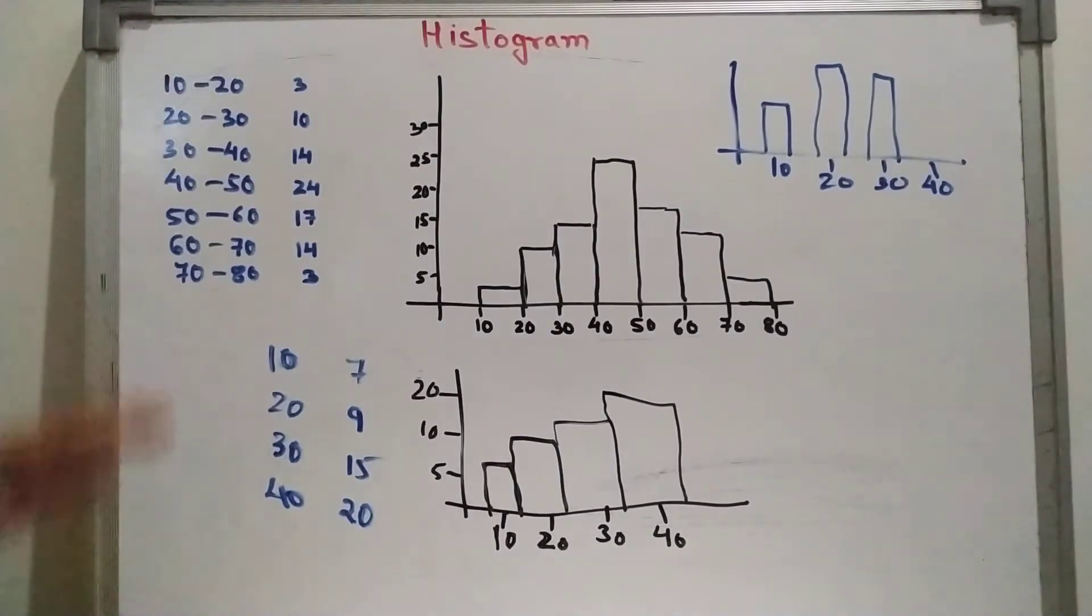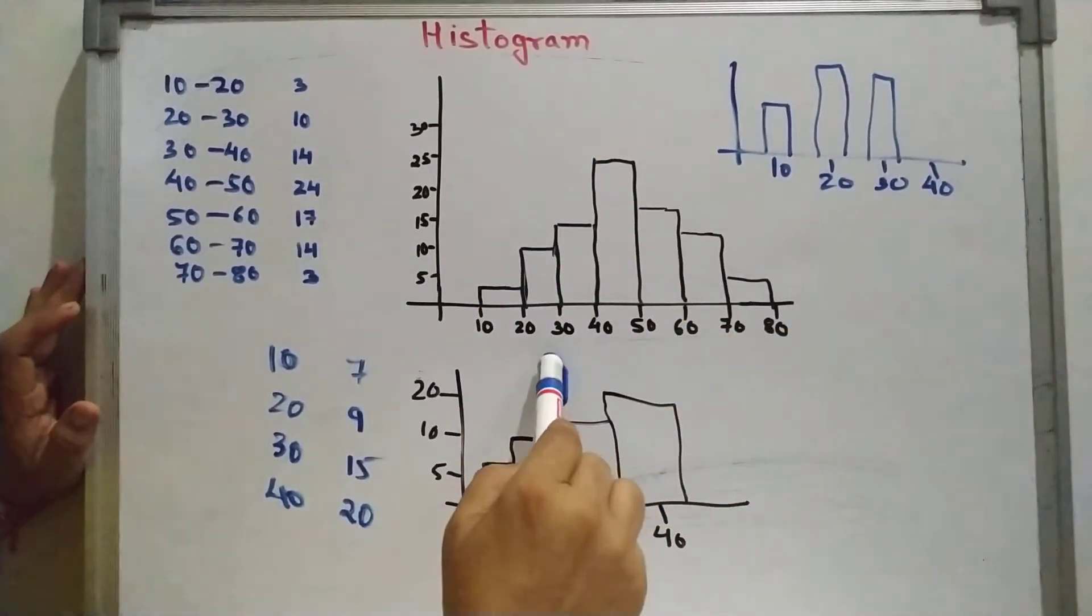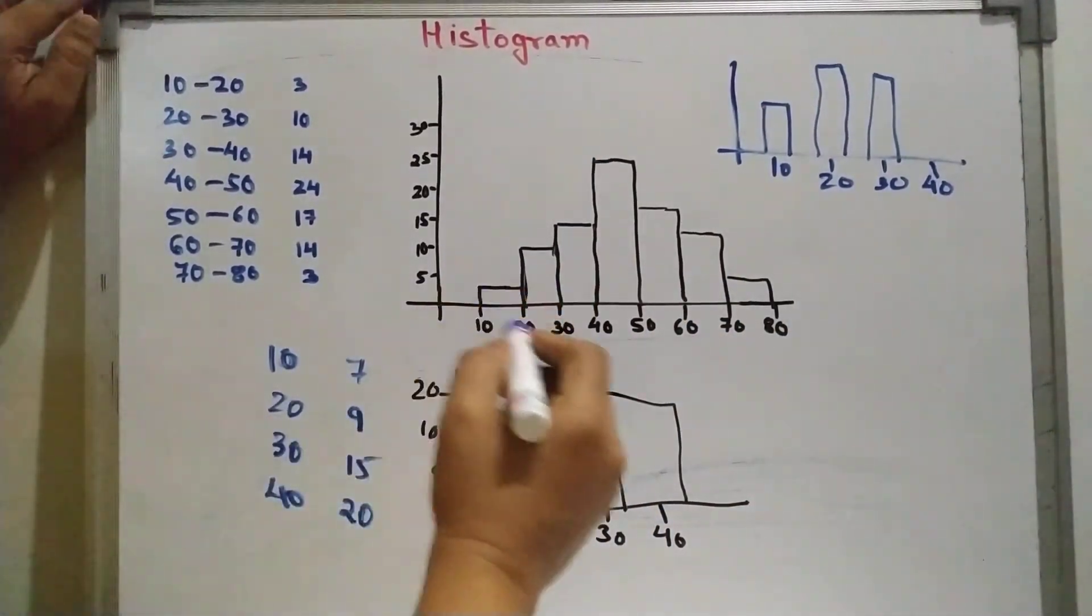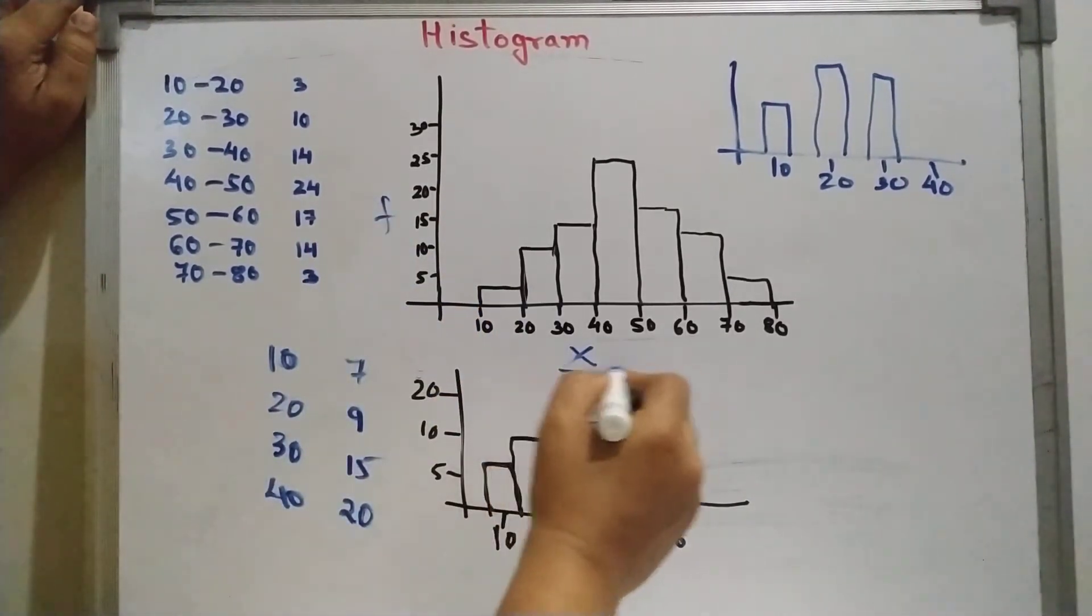So hope it is clear. What is histogram and what is bar diagram? The difference between the bar diagram and histogram. This is your frequency. Always remember this side is frequency. This is your x values.